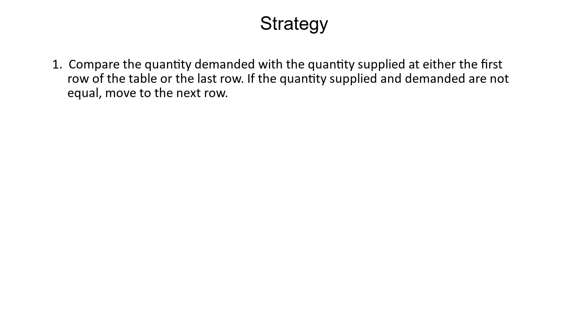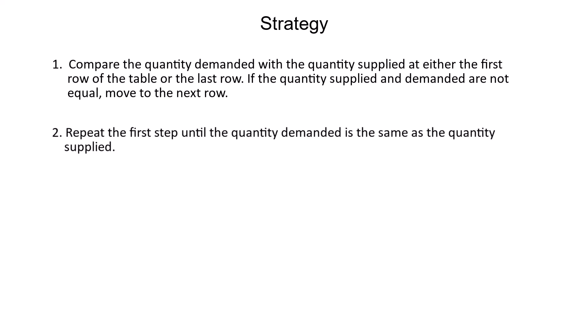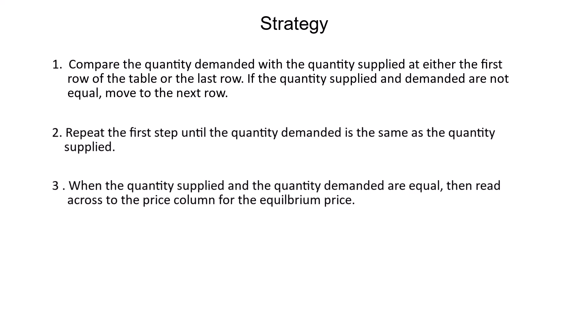The strategy for finding the equilibrium price and quantity on a supply and demand schedule is: 1. Compare the quantity supplied with the quantity demanded at either the first row or the last row of the table. If the quantity supplied and the quantity demanded are equal, you are done; if not, move to the next row. 2. Repeat the first step until the quantity supplied is the same as the quantity demanded. 3. When the quantity supplied and the quantity demanded are equal, read across to the price column for the equilibrium price.